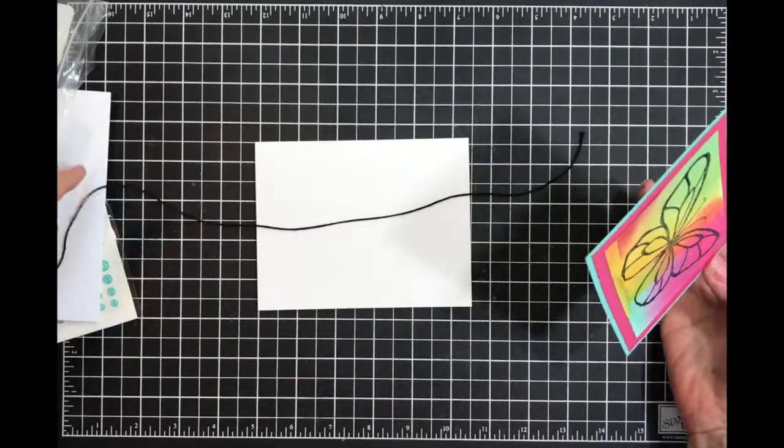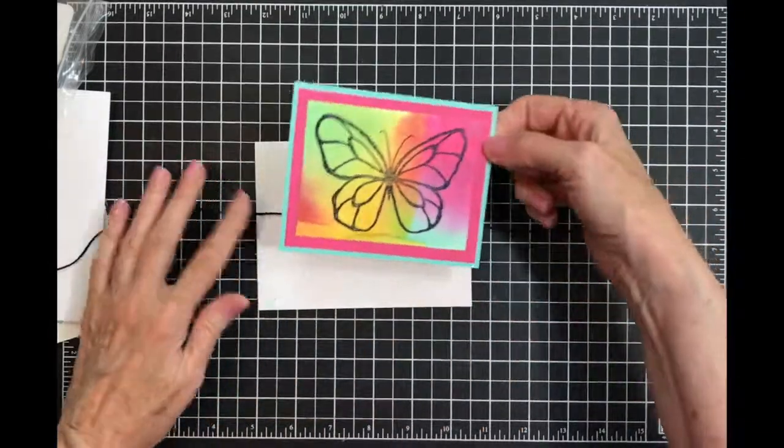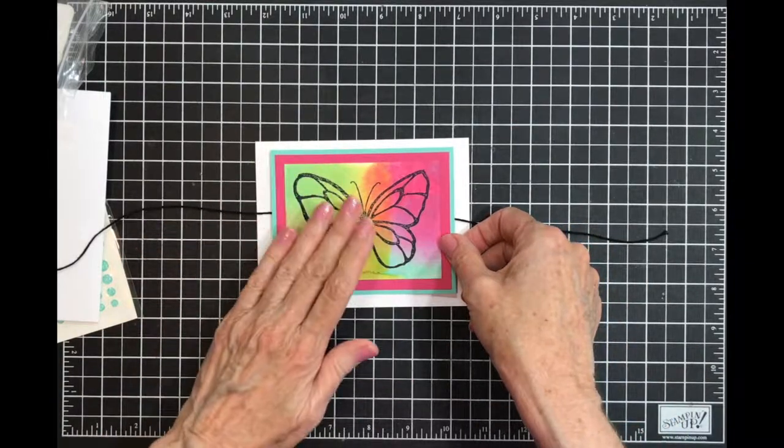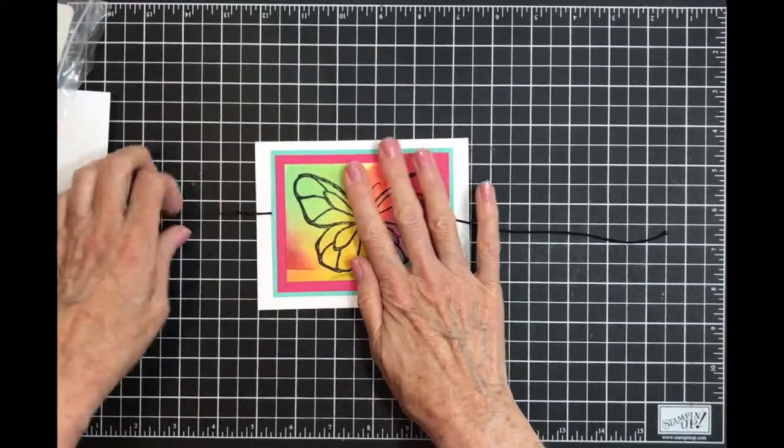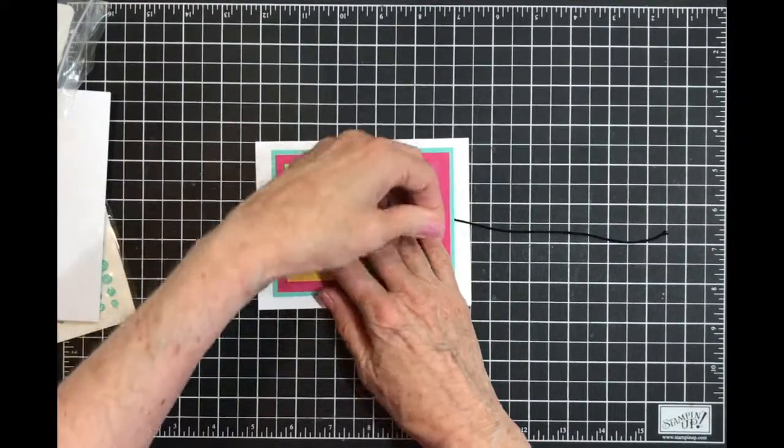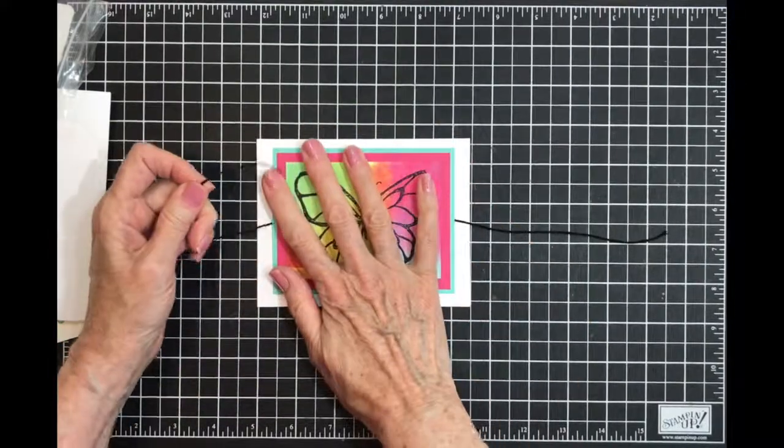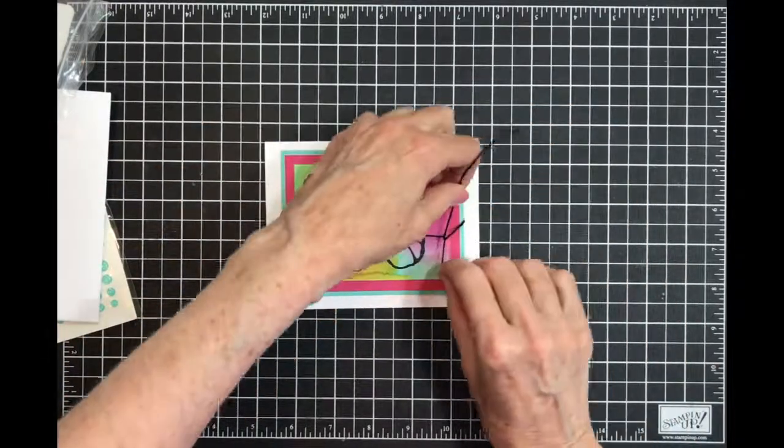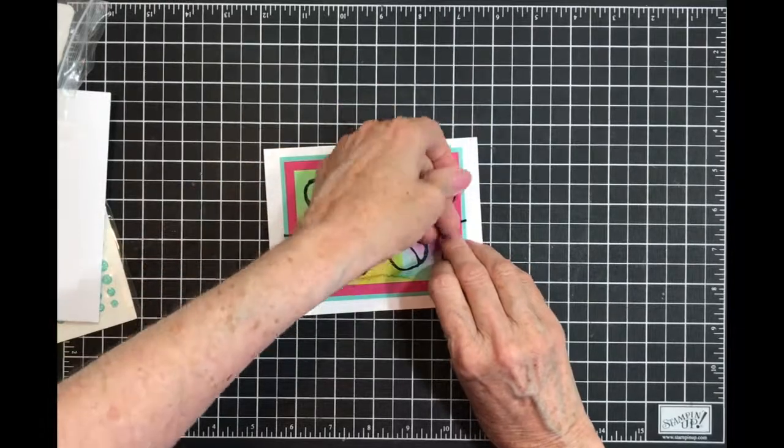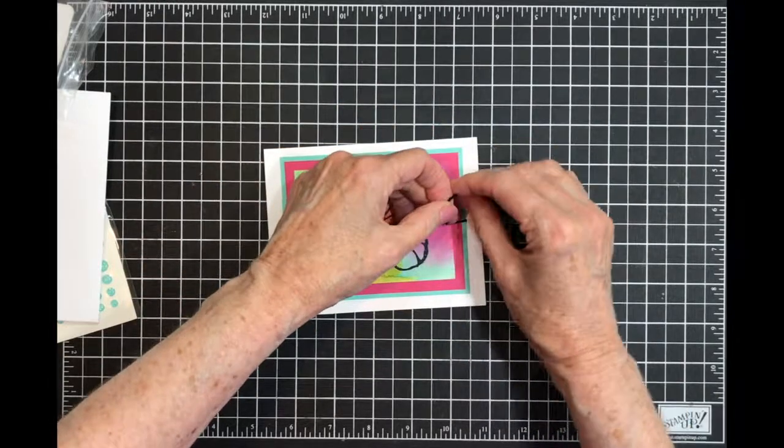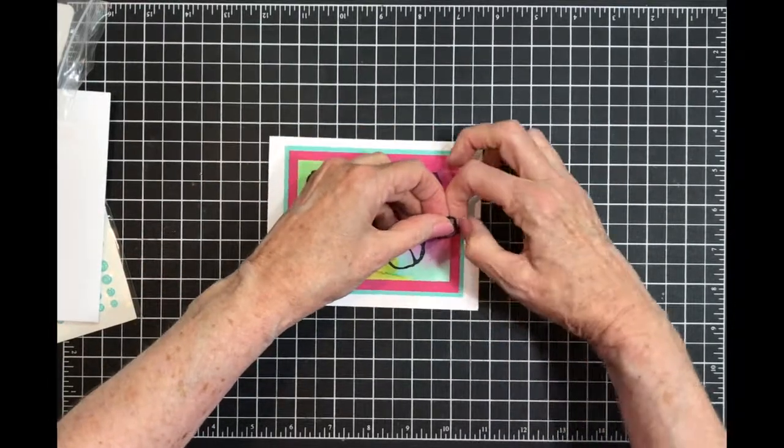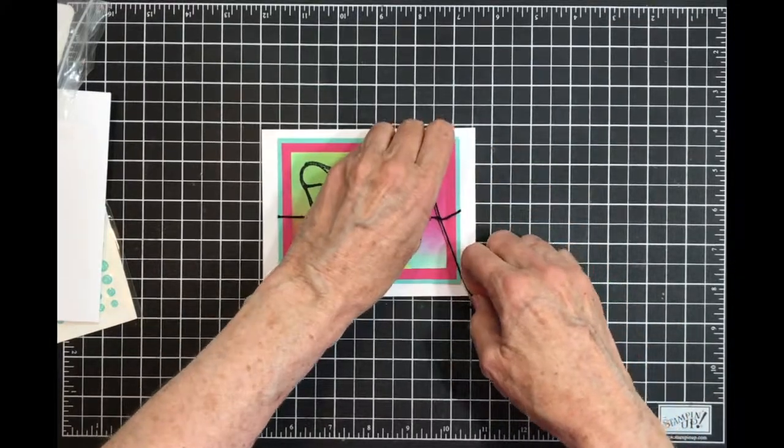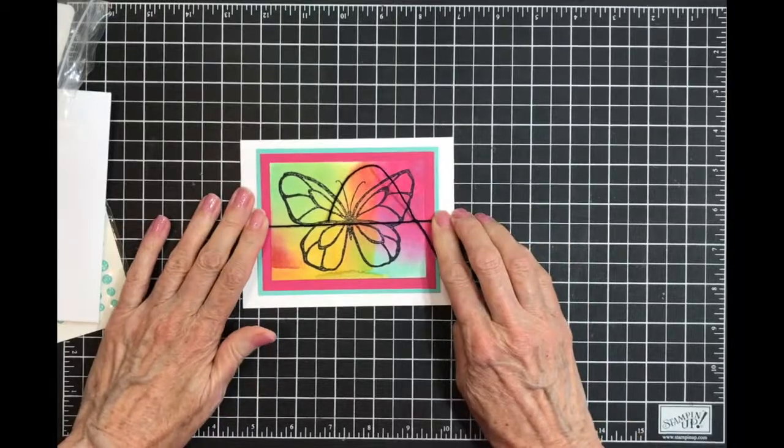And before it sets up too much, I'll pull it so that I can put a bow right here. And I have just enough. There it goes.